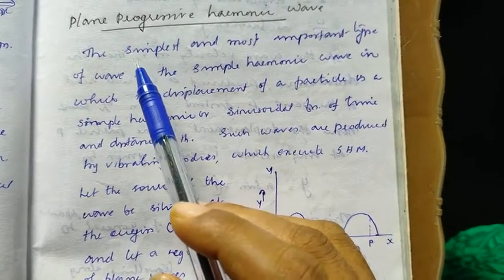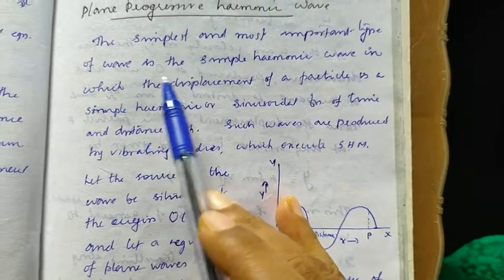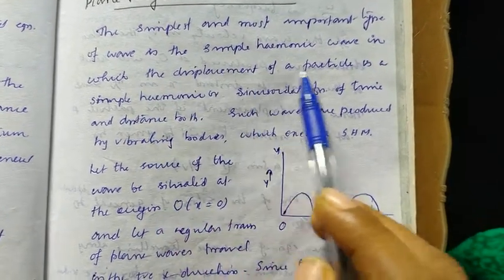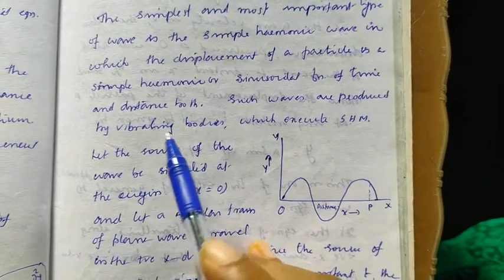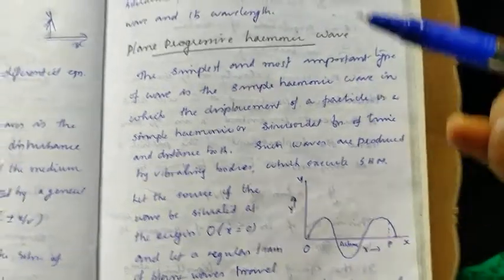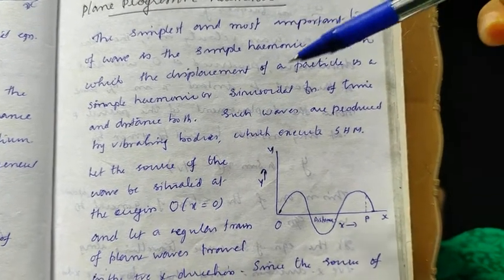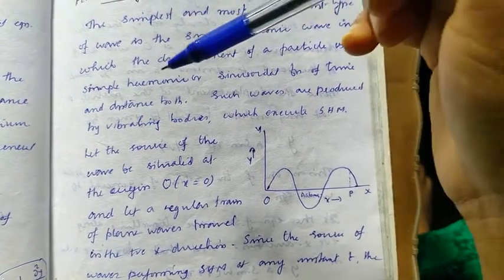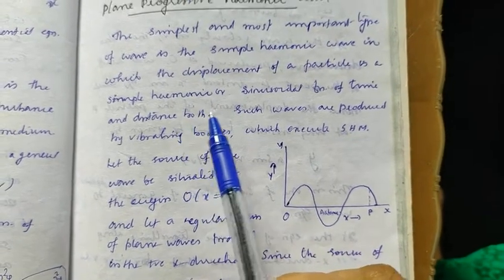We will discuss the plane progressive harmonic wave. The simplest and most important type of wave is the simple harmonic wave, because in this motion the displacement of the particle is a sinusoidal function of both time and distance. Such waves are produced by vibrating bodies which execute simple harmonic motion. The displacement is expressed in terms of time and distance.